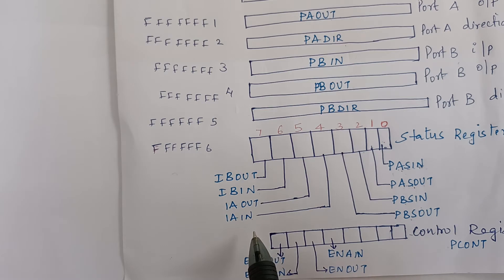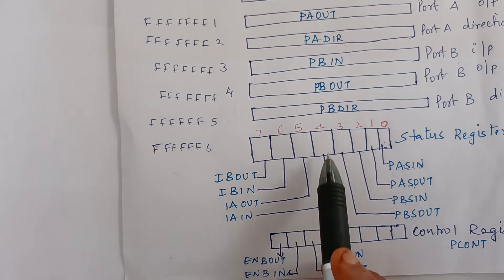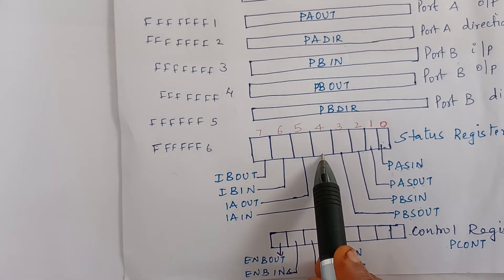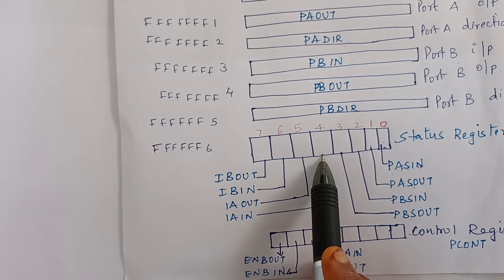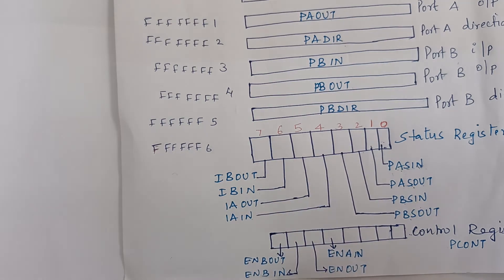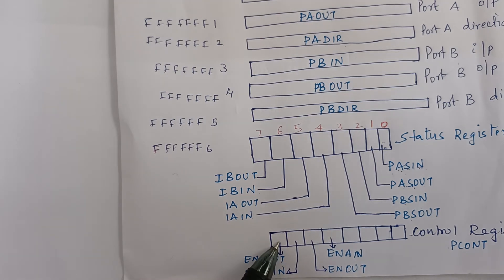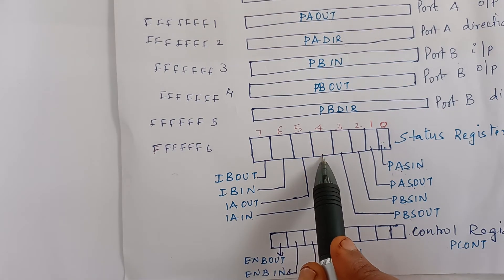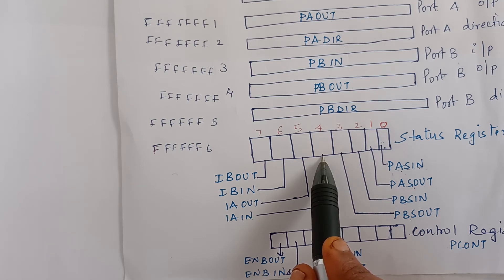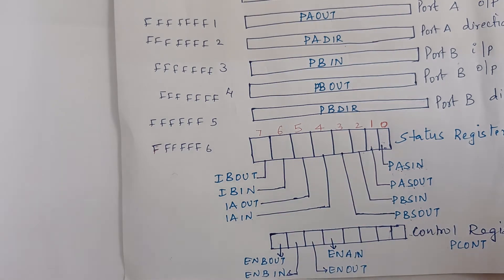Let us start with Port A. Interrupt flag IAIN (interrupt A in) is set to 1 when the interrupt is enabled and the corresponding input-output action takes place. The interrupt enable bits are held in the control register, which we will be dealing with now.